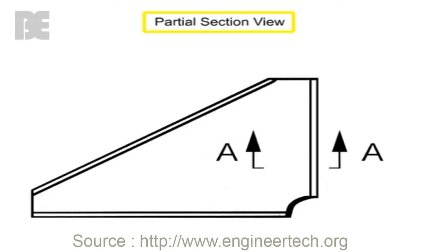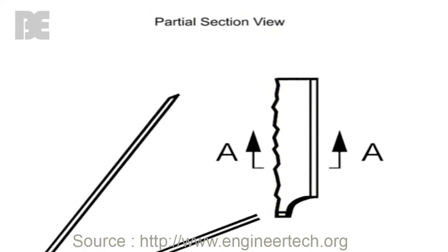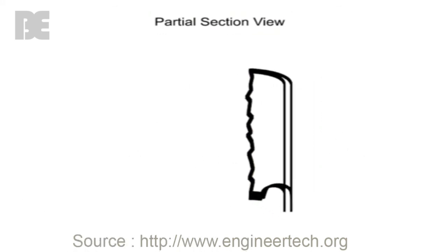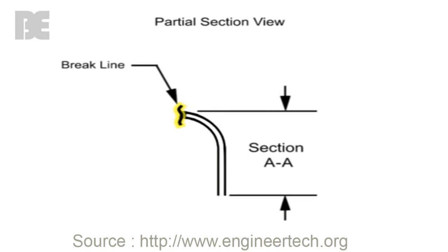A partial section view shows detail of an object without drawing conventional views. The cutting plane line only partially cuts the object and the section view ends with a short break line to indicate where the cutting plane ended.